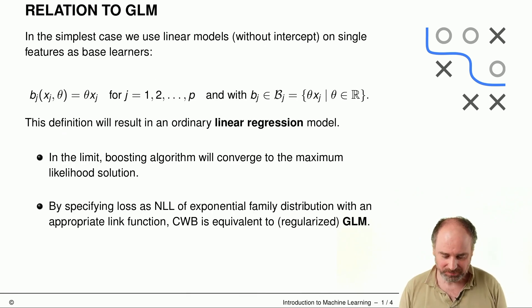As we've already discussed, one of the most simple choices for base learners in component-wise boosting would just be to use linear effects. We could use them without intercepts, as we've discussed before, and then use them on centered features. And now the question is why would we actually want to do that?